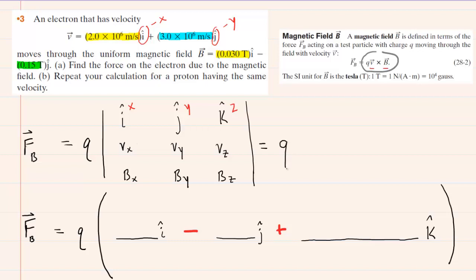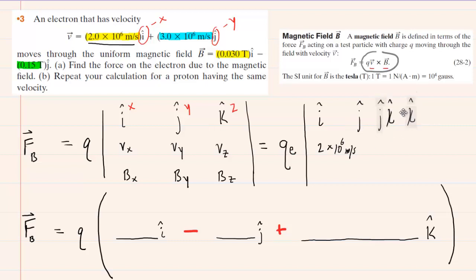We take the charge on an electron and multiply by this cross product. Along the top we put i hat, j hat, and k hat — the x, y, z directions. For the velocity x component, that has a value of 2×10⁶ meters per second. For the y component of velocity, that was given as 3×10⁶ meters per second. There is no z component for the velocity, so we put a zero there.